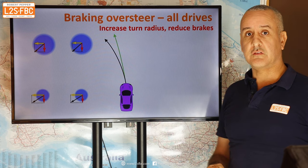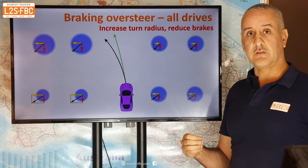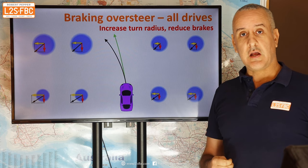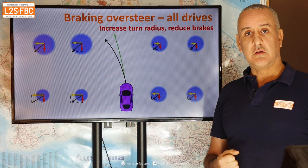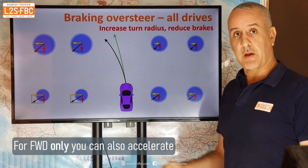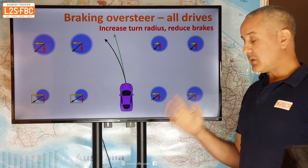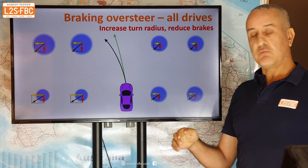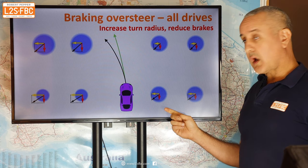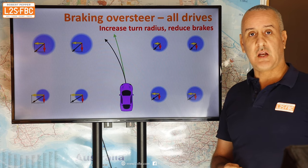To fix braking oversteer, we increase the turn radius and also reduce the brakes. By reducing the brakes, we slightly increase the size of the rear traction circle — increasing available grip — and we also reduce the grip demand. So there's a double effect: reducing braking increases available grip and reduces traction demand simultaneously, which should bring traction demand back within the available traction limit.